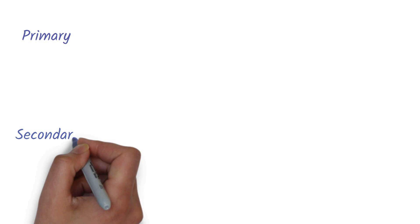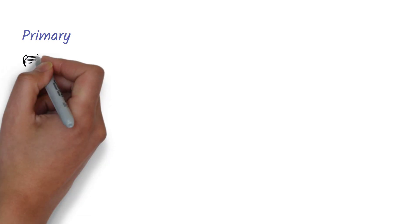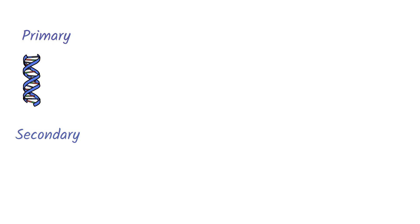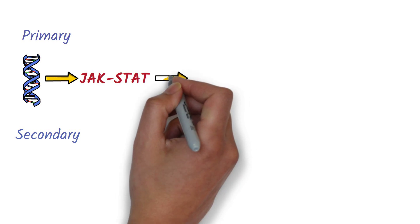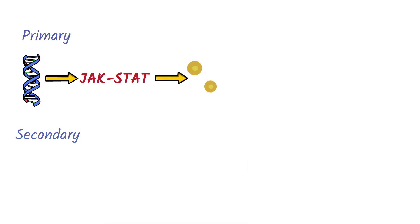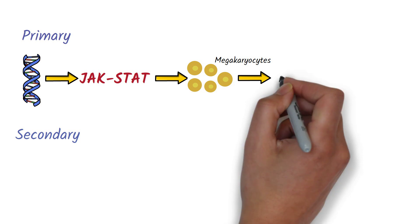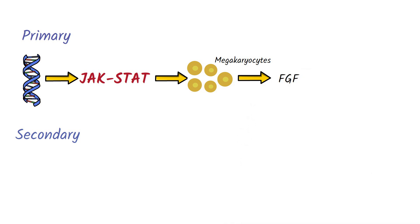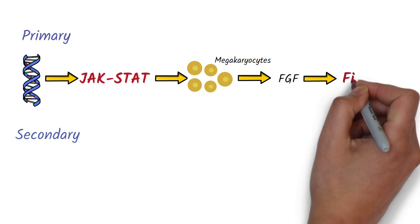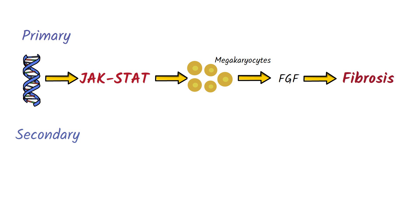Myelofibrosis can be primary or secondary. Primary myelofibrosis is due to a genetic mutation within the hematopoietic cells which activates a signaling pathway called the JAK-STAT pathway. This pathway causes proliferation of stem cells in the bone marrow, which differentiate into megakaryocytes. These megakaryocytes release cytokines like fibroblast growth factor, causing proliferation of fibroblasts and, as a result, fibrosis of the bone marrow, replacing the hematopoietic cells.